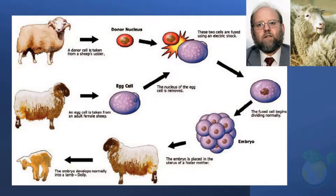In SCNT, scientists begin by removing the nucleus from a somatic, or body, cell of a donor mammal. They then collect an egg cell from a donor of the same species. The egg cell nucleus is removed and replaced with the nucleus of the somatic cell. Once inside the egg, the somatic nucleus is reprogrammed by cytoplasmic factors in the egg, returning it to an undifferentiated, embryonic stage. The egg may then be implanted into the uterus of a surrogate mother to produce a clone animal through a process known as reproductive cloning.